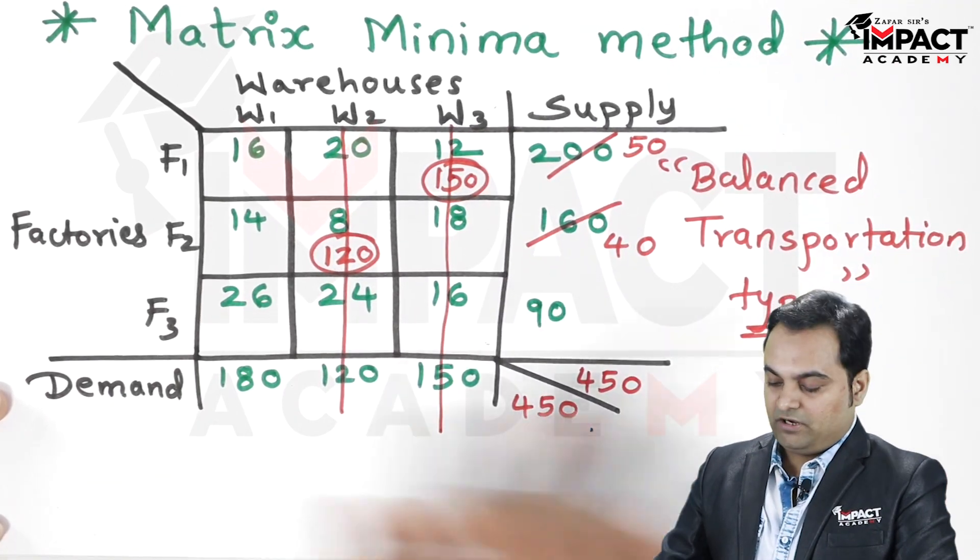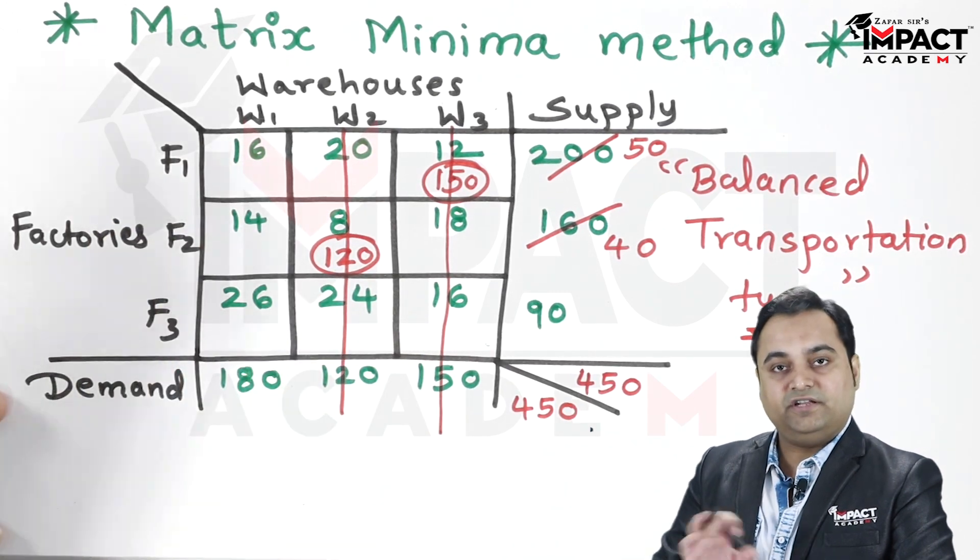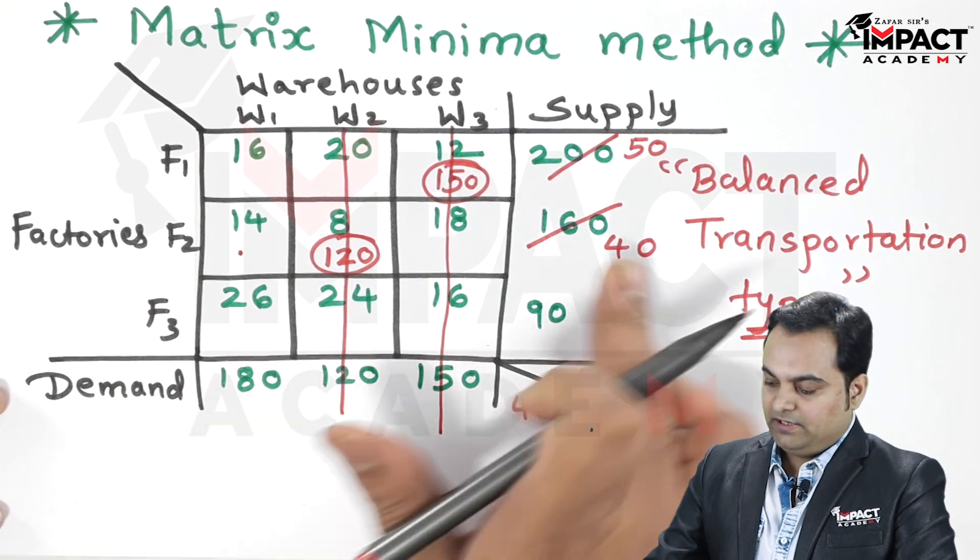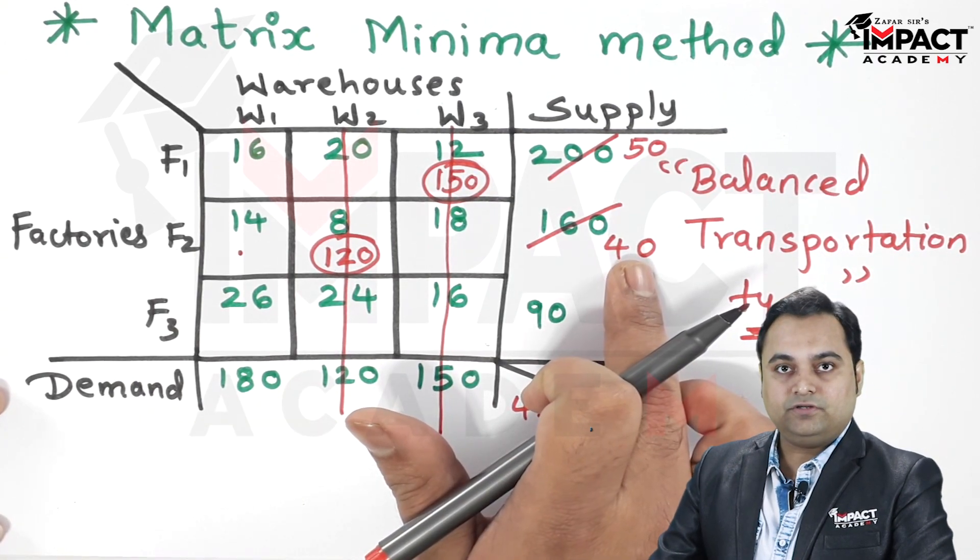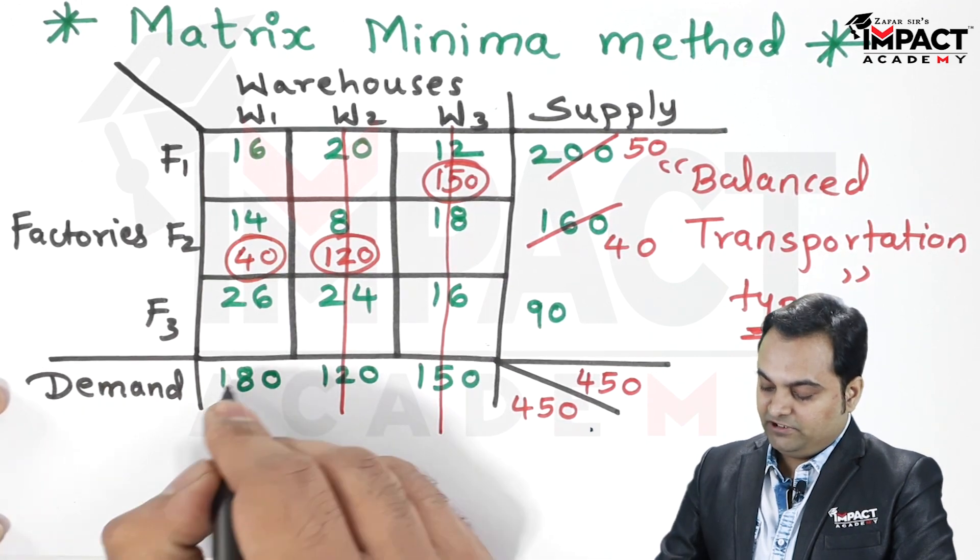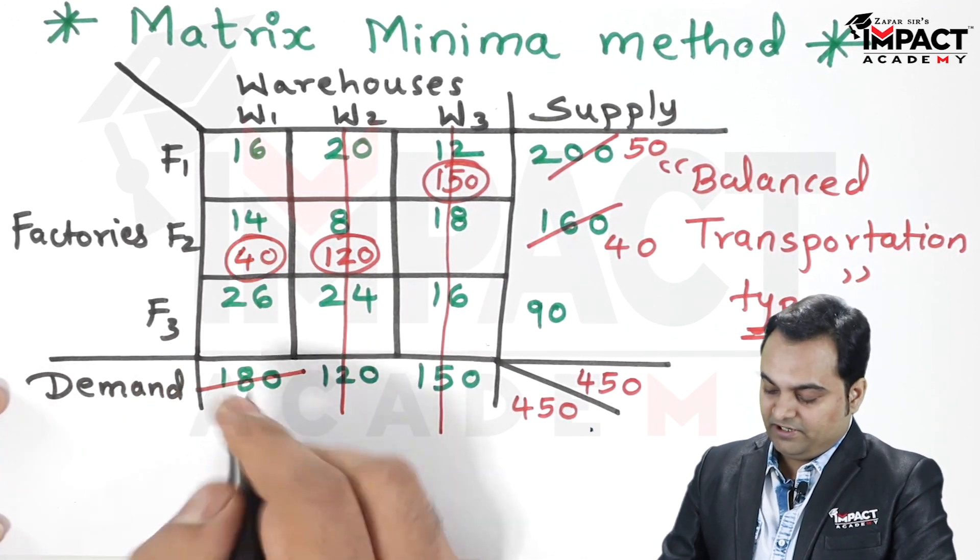From 200, 150 is subtracted, so what remains is 50. The demand is completely met, so this entire column can be cancelled. Next, out of the remaining values, check the next minimum value which is 14. Demand is 180 and supply is 40.